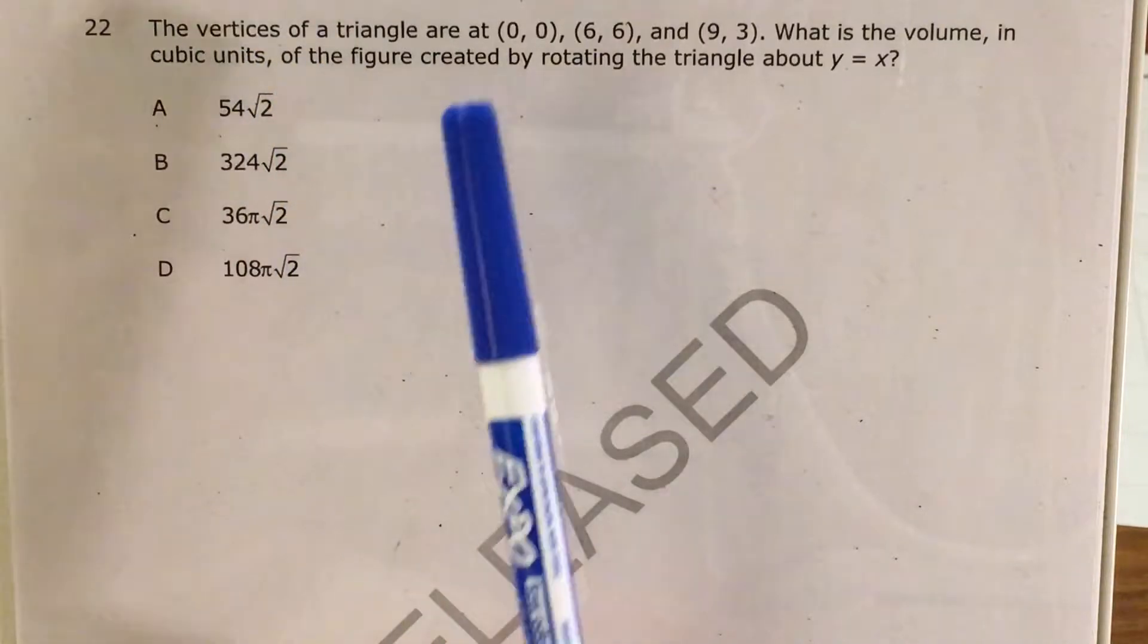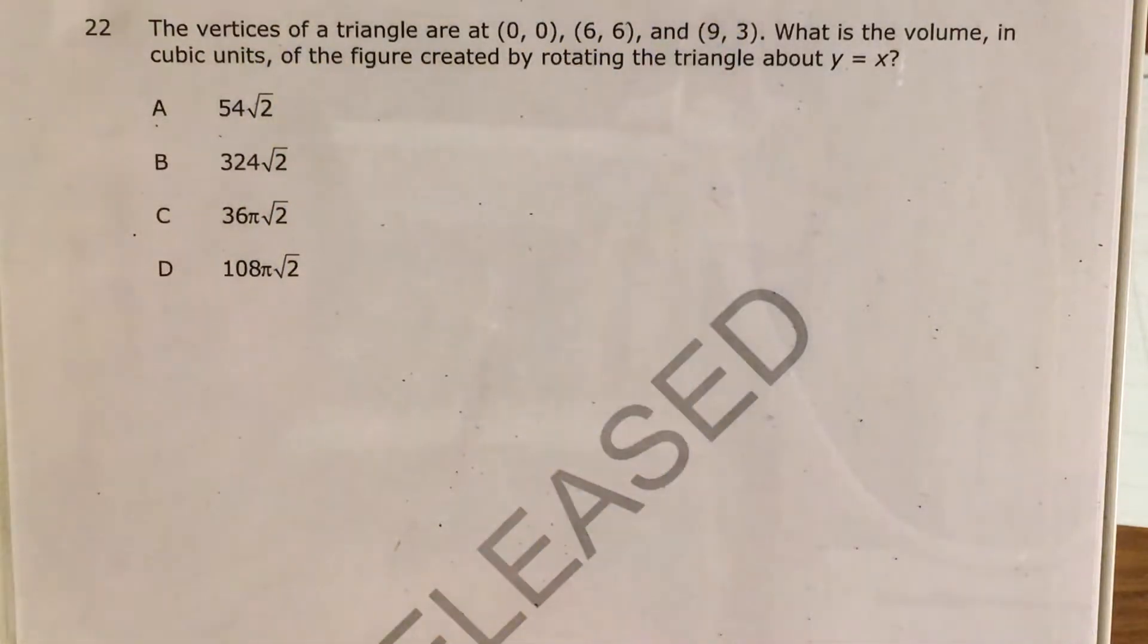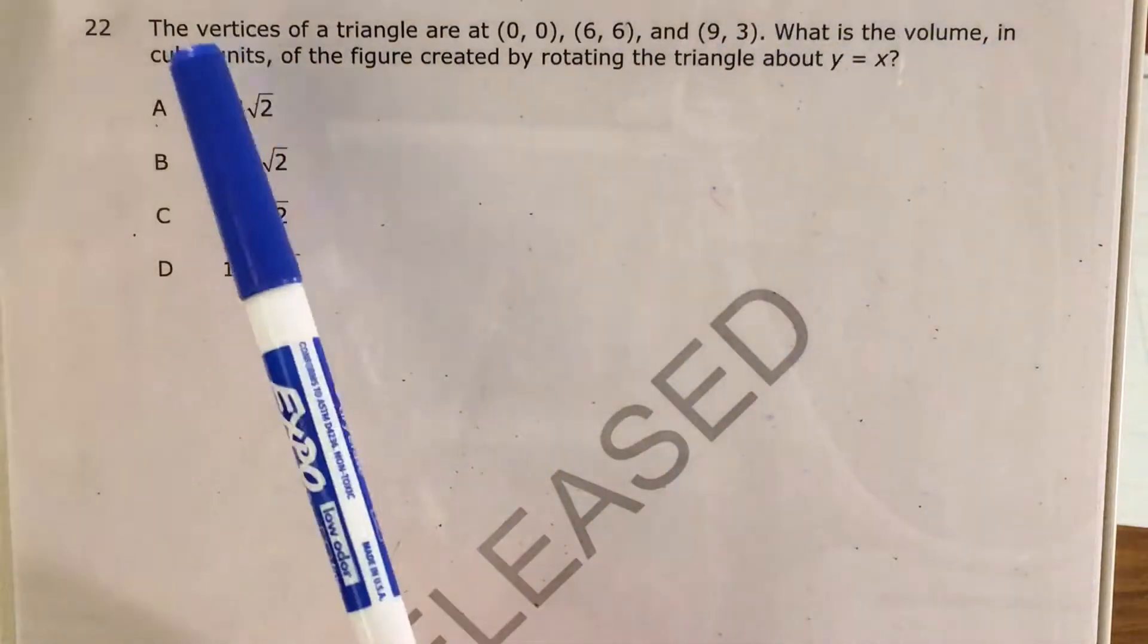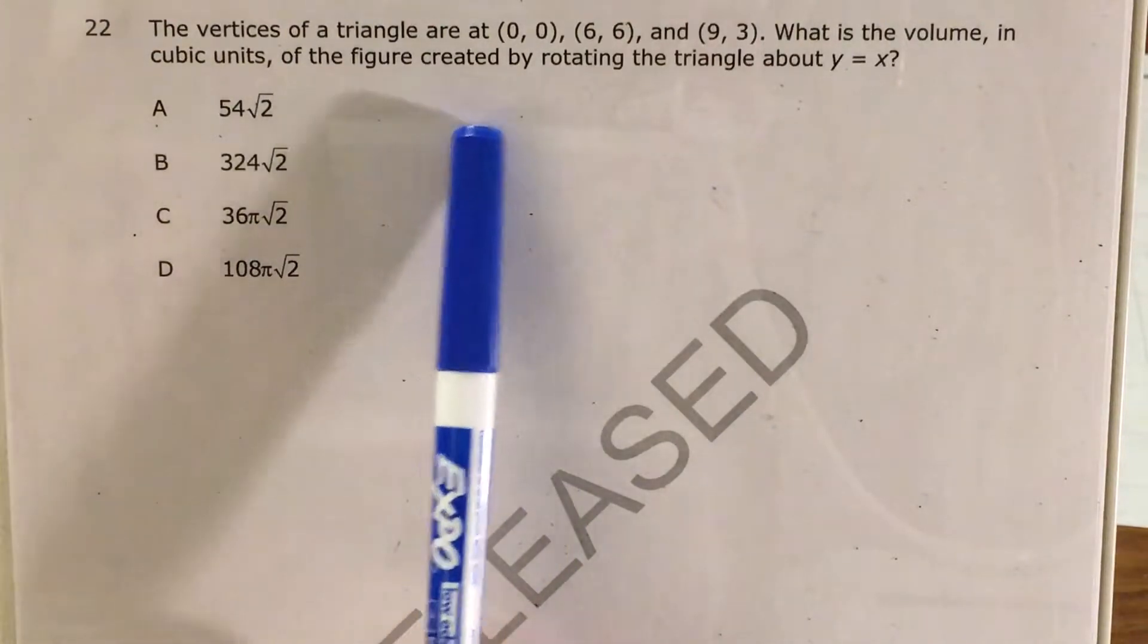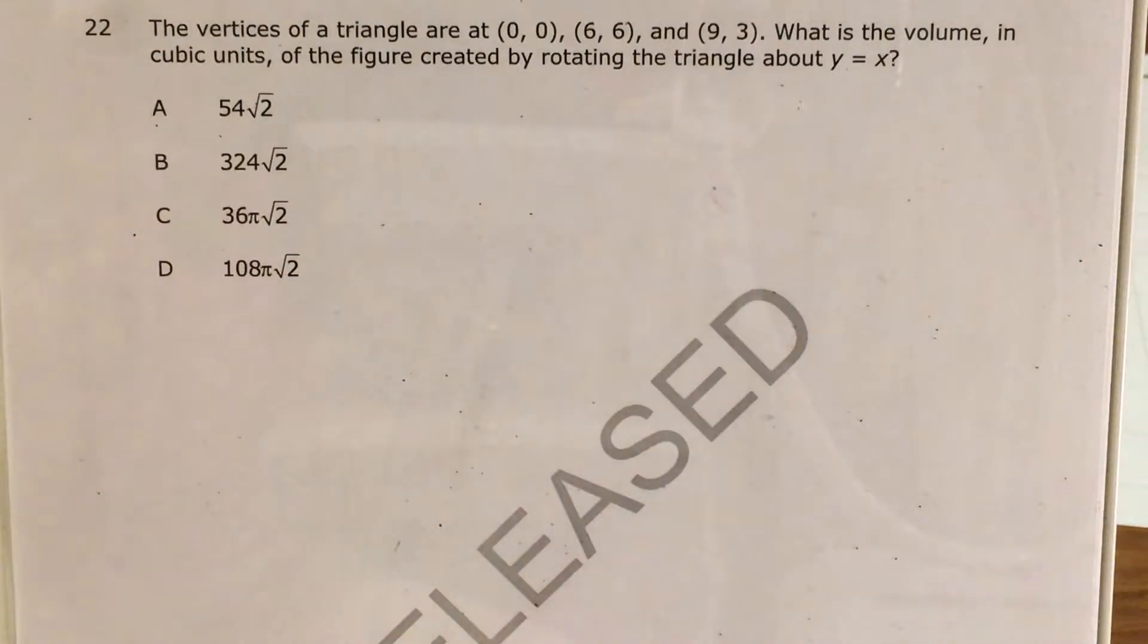Today we're going to tackle question 22 in the Math 3 questions that North Carolina released this past school year. The question tells us that the vertices of a triangle are at (0,0), (6,6), and (9,3). And we're trying to find the volume in cubic units of the figure created by rotating the triangle about y equals x.